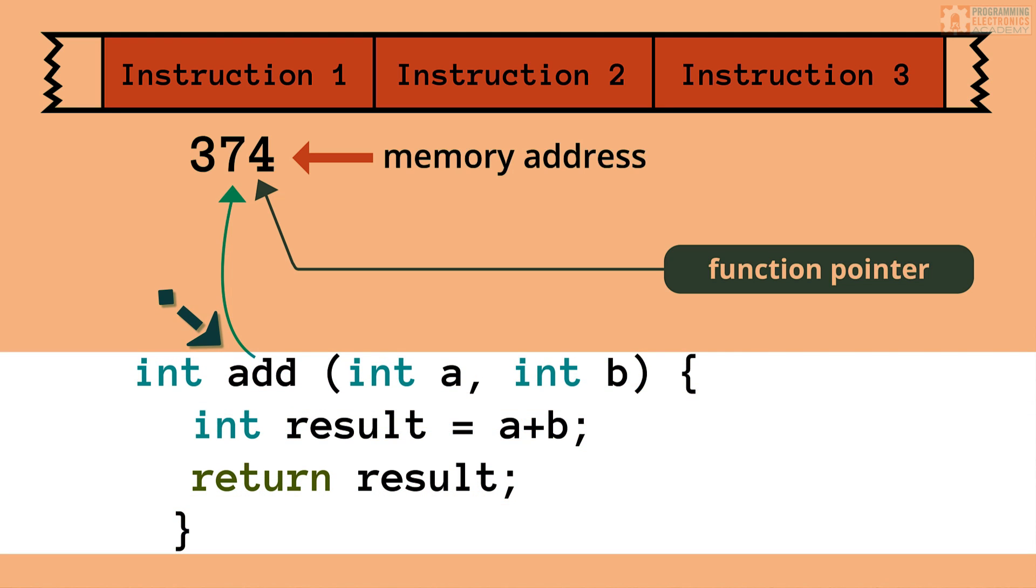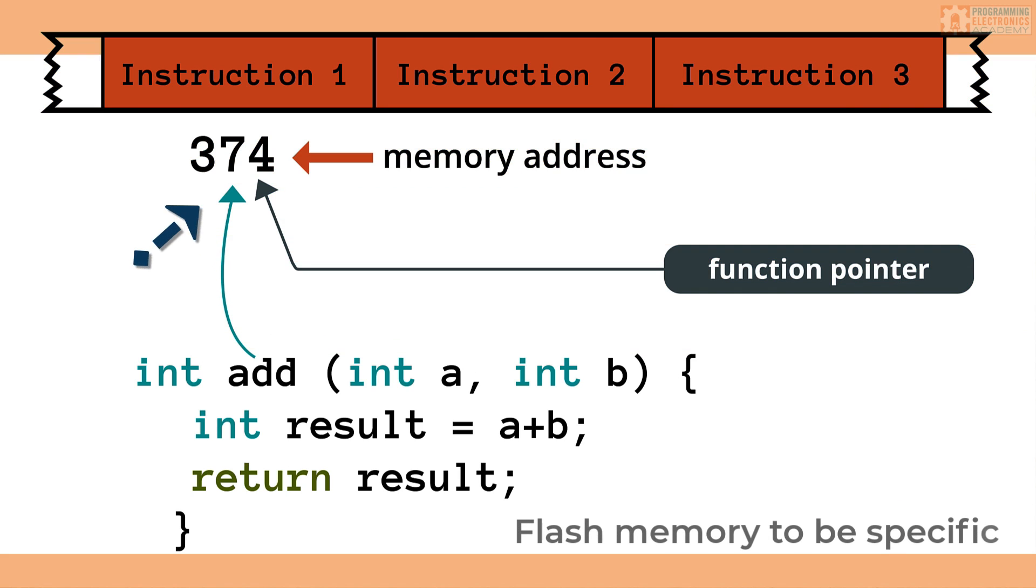So to accomplish this task, many lower-level instructions have to be executed by the processor. And those instructions are generated from our code by the compiler, and they're stored at a specific location in memory. And the address where those instructions start is what is stored in a function pointer. So let me say that one more time.